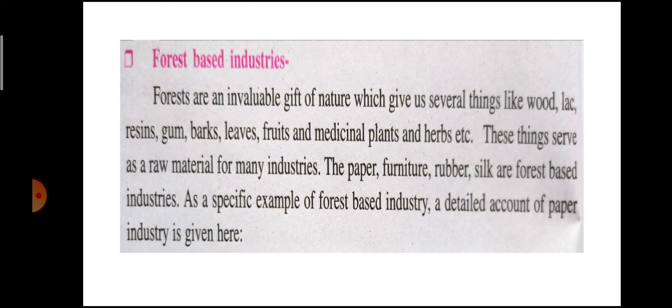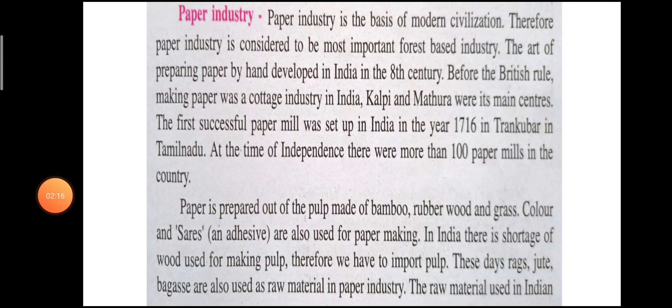These things serve as raw material for many industries — the paper, furniture, rubber, silk, and forest waste industries. The paper industry is the basic of modern civilization. Therefore, paper industry is considered to be the most important forest waste industry.